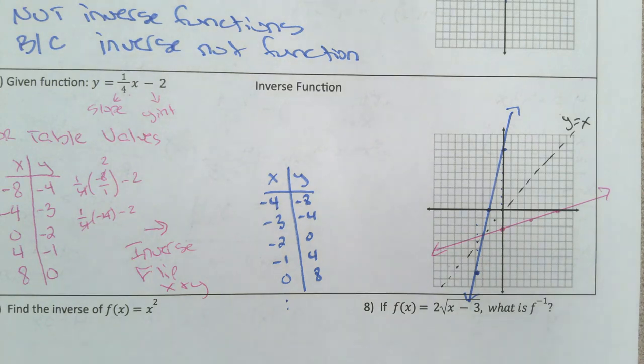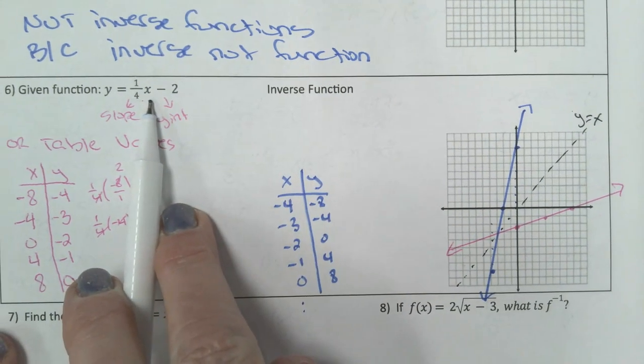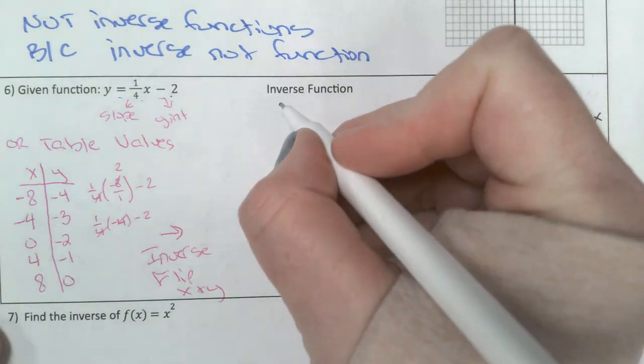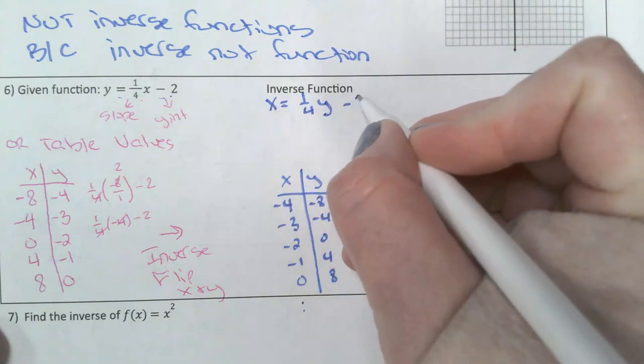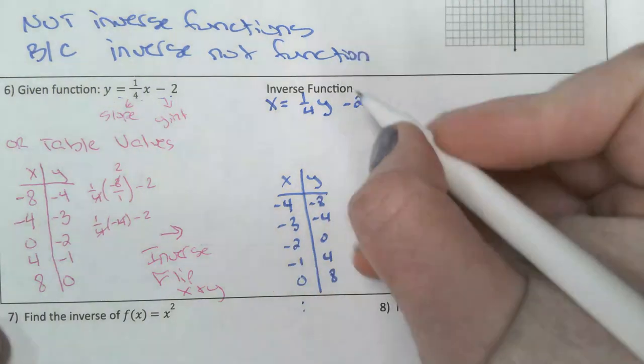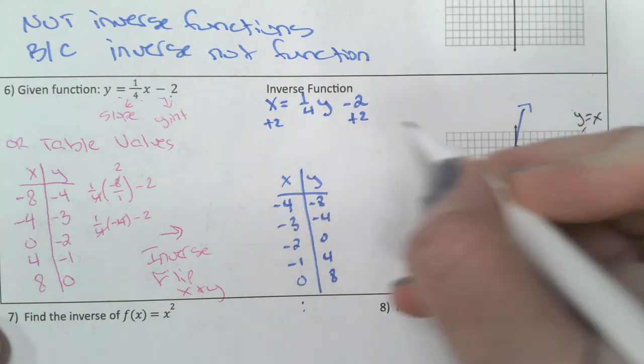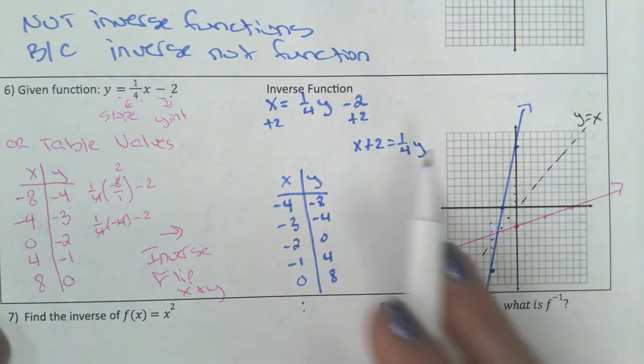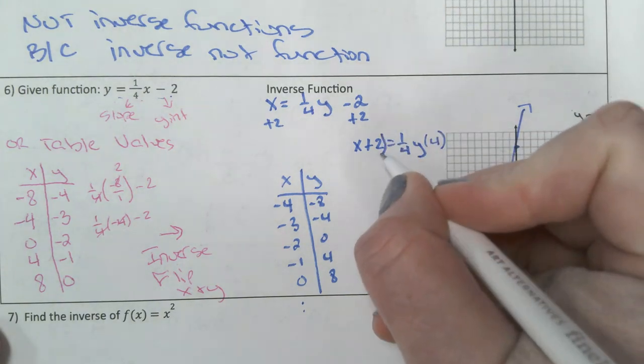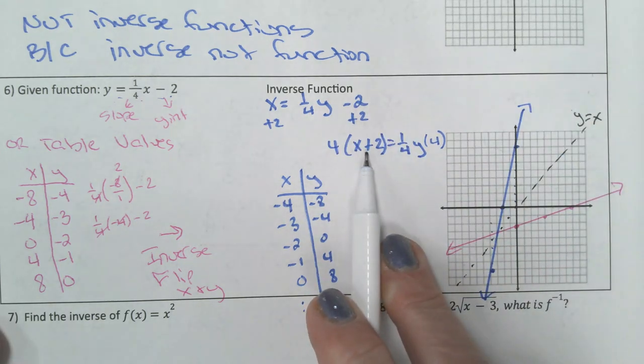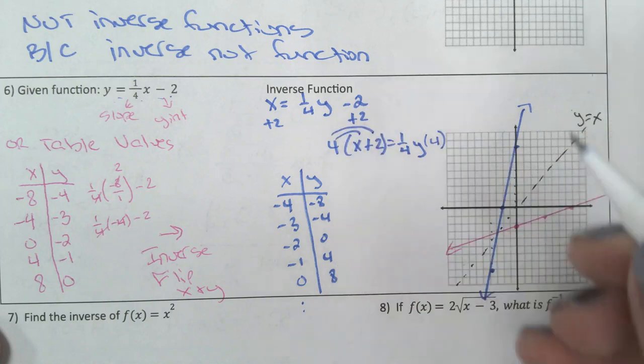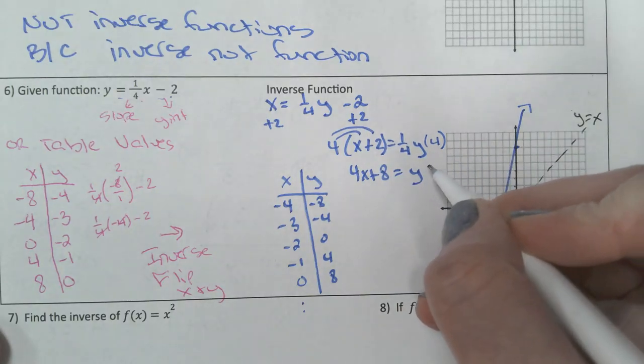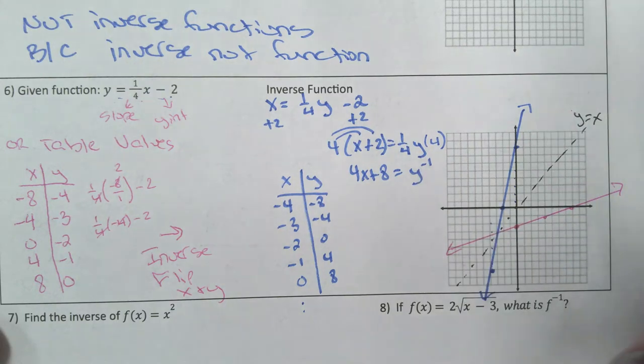Or you could always do the inverse of this. That is certainly an option. To find the inverse, remember we said the first thing that you do is you flip x and y. So I would have x equals 1/4 y minus 2, and then you solve for y. I'm going to add 2 to both sides and I have x plus 2 equals 1/4 y. I have a fraction coefficient so I'm going to multiply both sides by the reciprocal, which is 4. I'm going to distribute the 4 and get 4x plus 8 equals y.